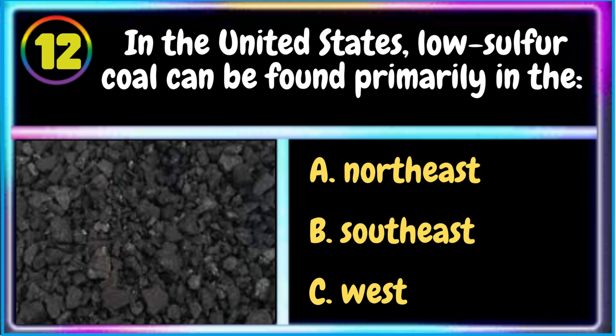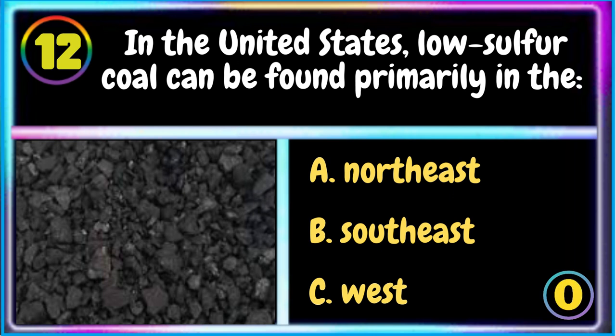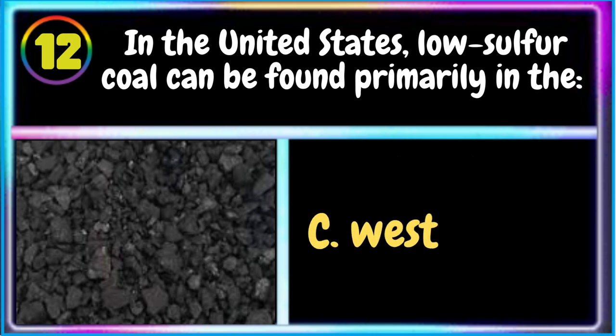12. In the United States, low sulfur coal can be found primarily in the: A. Northeast B. Southeast C. West. The correct answer is C. West.